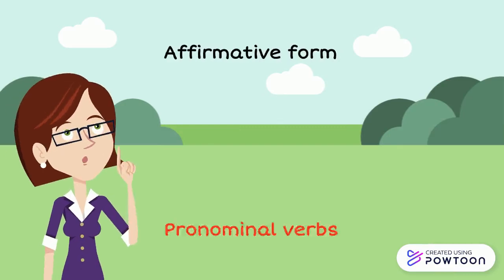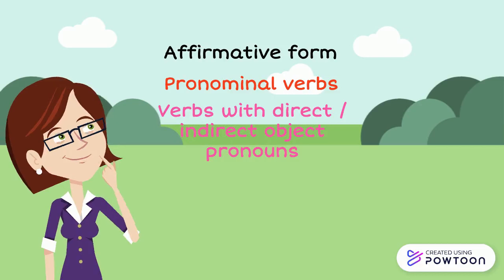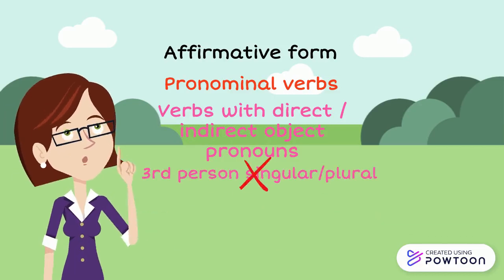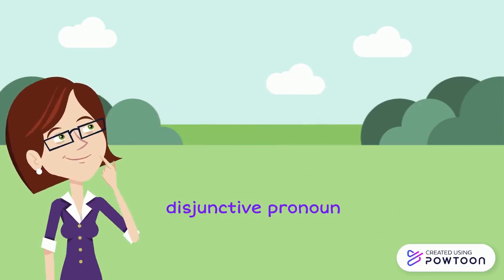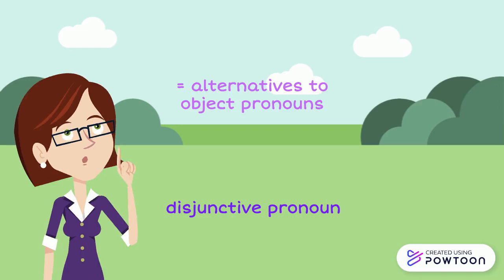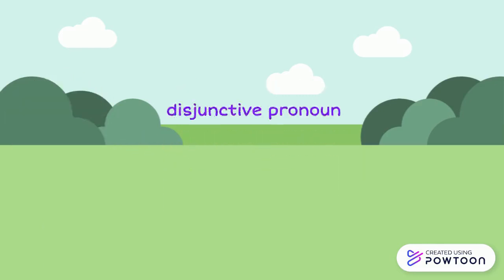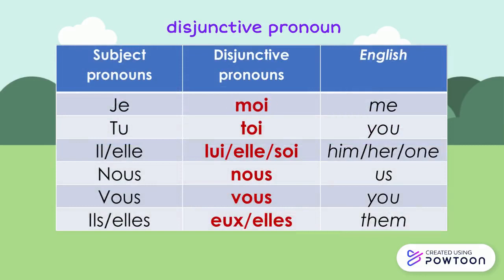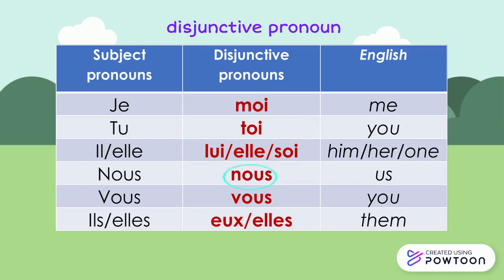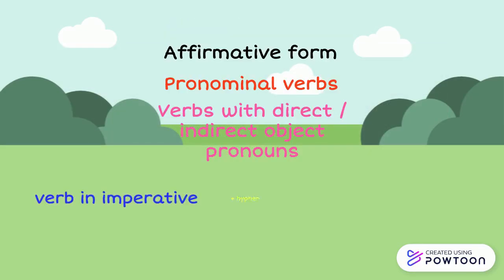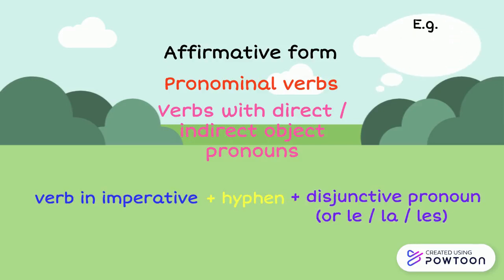In the affirmative form, pronominal verbs and verbs with a direct or indirect object pronoun, except for the third person singular or plural, use a disjunctive pronoun. These are alternatives to object pronouns used in some cases such as after prepositions or with the imperative. The structure is: verb in the imperative plus hyphen plus disjunctive pronoun. For instance: 'Lève-toi' — get up — or 'Regardez-moi' — watch me.